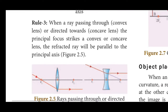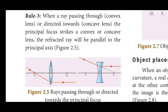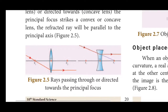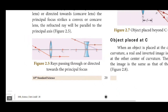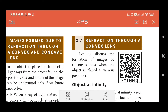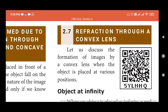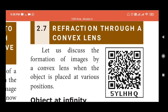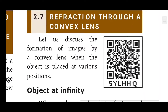Third rule: when a ray passes through the principal focus before striking the lens, the refracted ray emerges parallel to the principal axis. This applies to both convex and concave lenses for image formation.